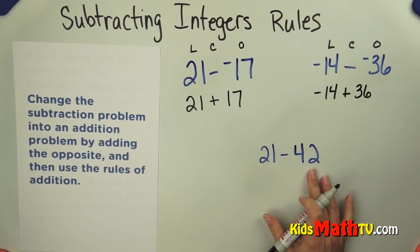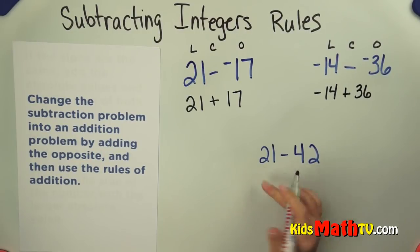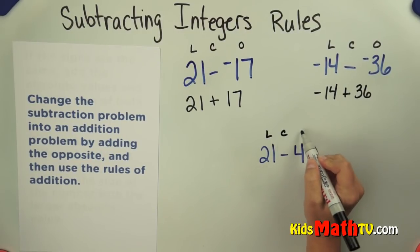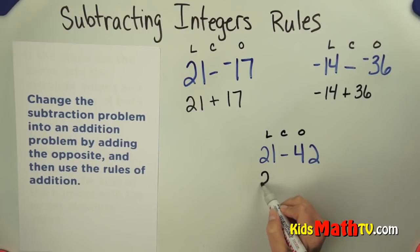Let's do one more. 21 minus 42. We're going to do leave change opposite. Leave the first number, change the subtraction to addition, and use the opposite of 42. The opposite of 42 is negative 42.